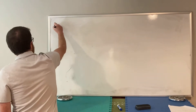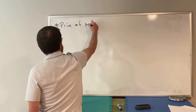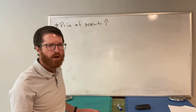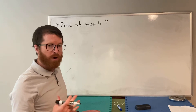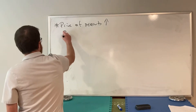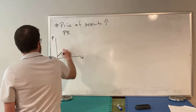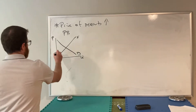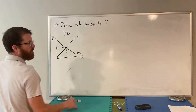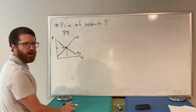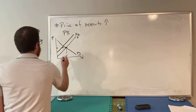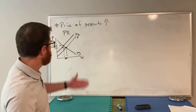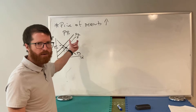For example, if the price of peanuts goes up - maybe it's a really bad weather year so it's hard to produce them - that's going to affect many markets. The market for peanut butter will without a doubt be affected: as the price of peanuts goes up, producers have a harder time producing peanut butter, so supply shifts to the left, leading to higher prices and reduced quantity. Peanuts are an input in peanut butter, so those markets are connected.